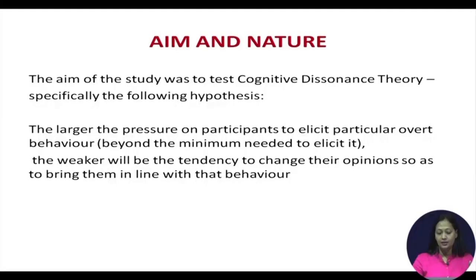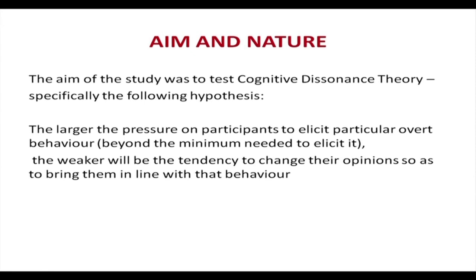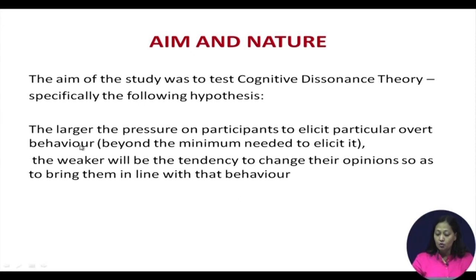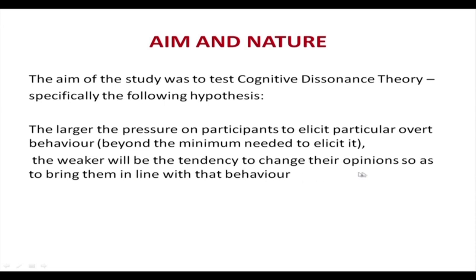Festinger wished to test the cognitive dissonance theory in an experimental situation. He created this hypothesis: the larger the pressure on participants to elicit a particular overt behavior — that is, beyond the minimum needed to elicit it — the weaker will be the tendency to change their opinions to bring them in line with that behavior. In other words, the more pressure on participants to express a particular outward behavior, the less probable it is that they will change their opinions.